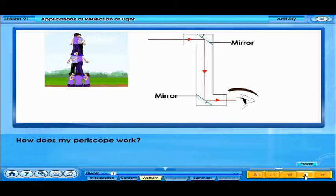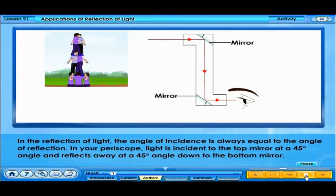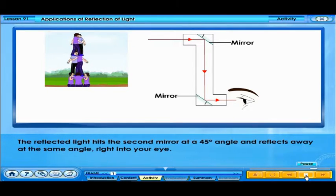How does my periscope work? In the reflection of light, the angle of incidence is always equal to the angle of reflection. In your periscope, light is incident to the top mirror at a 45 degree angle and reflects away at 45 degree angle down to the bottom mirror. The reflected light hits the second mirror at a 45 degree angle and reflects away at the same angle.